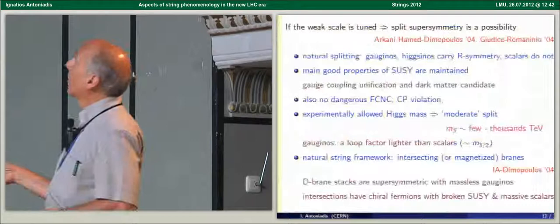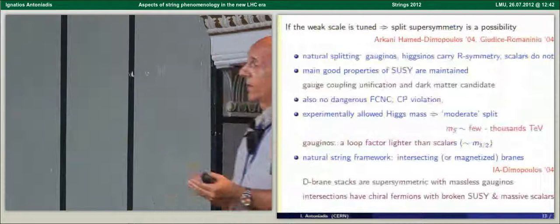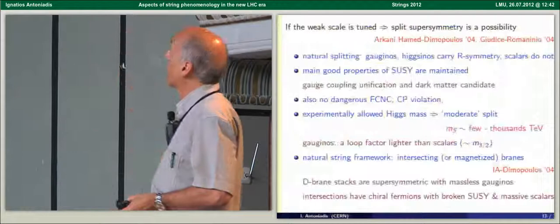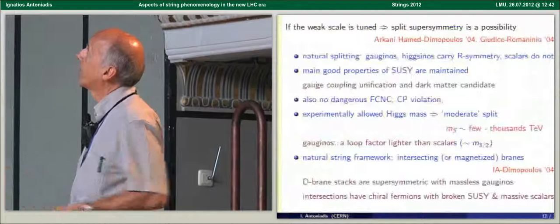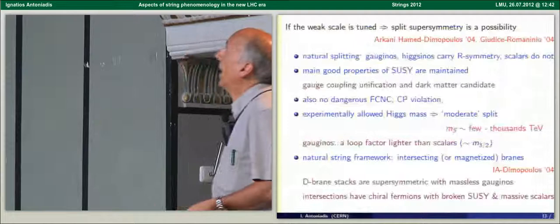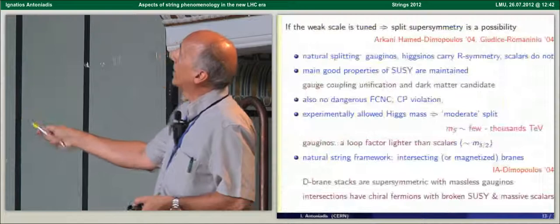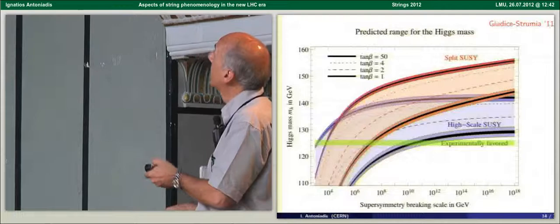Of course if the Higgs scale is tuned, another possibility is the one that discussed by Savas, which is split supersymmetry, which is based on the fact that there is R-symmetry under which gauginos and higgsinos transform. So if R-symmetry is broken at low energies while supersymmetry is broken at high energies, then one could imagine a situation in which the gauginos and the higgsinos are light while the scalars are not. And this has the good properties of supersymmetry maintained, such as gauge coupling unification and the dark matter candidate. It doesn't introduce flavor problem and so on.